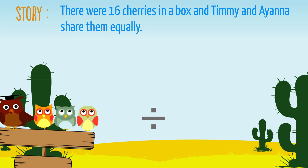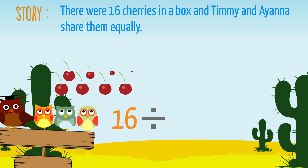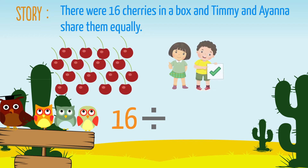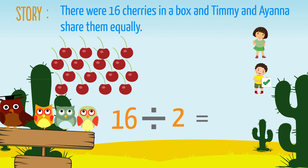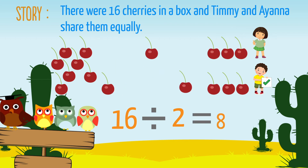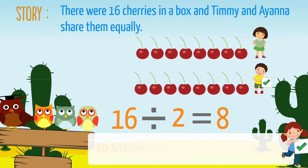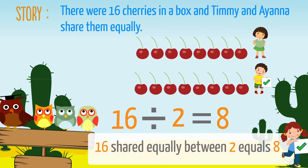Our calculation would look like this. 16 cherries shared equally between two people gives eight cherries each. Or, 16 shared equally between two equals eight.